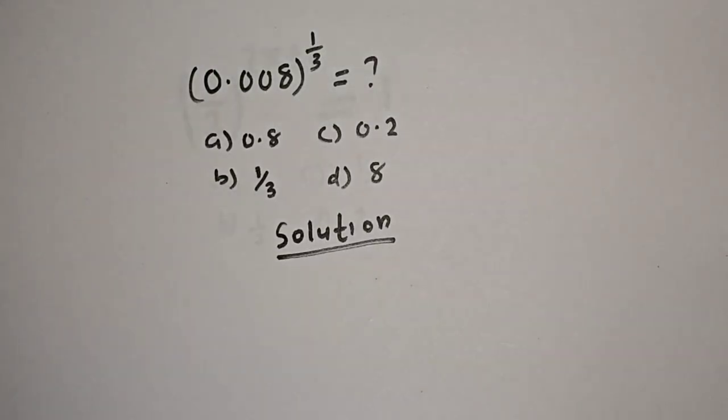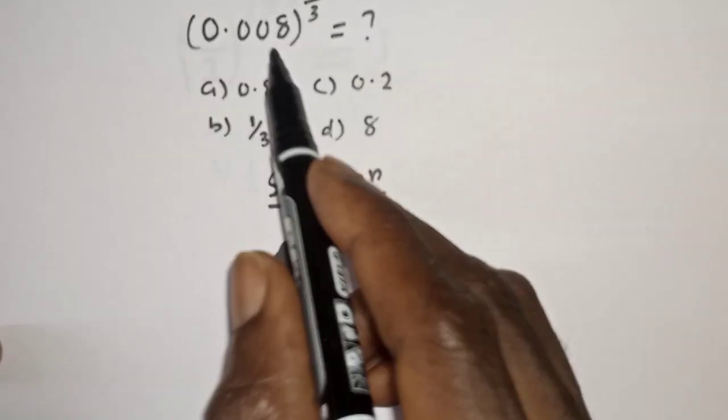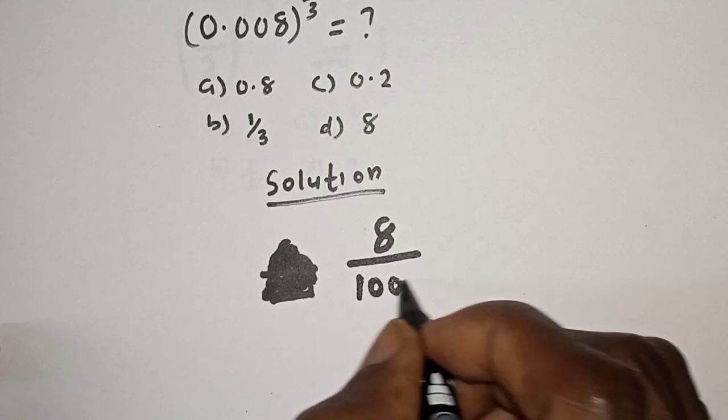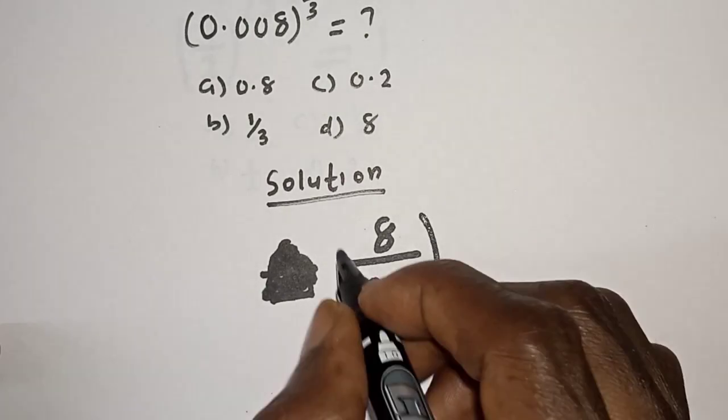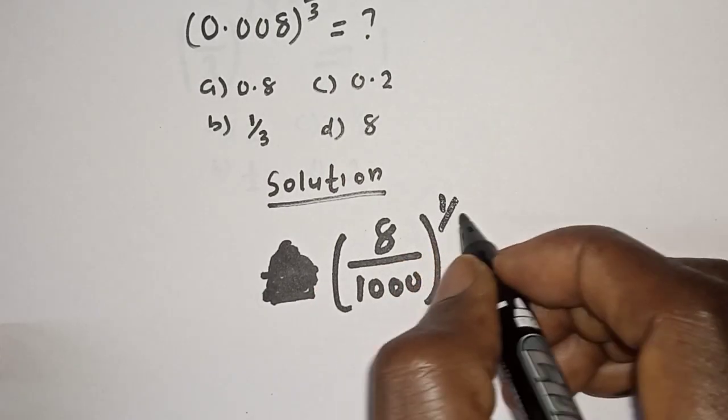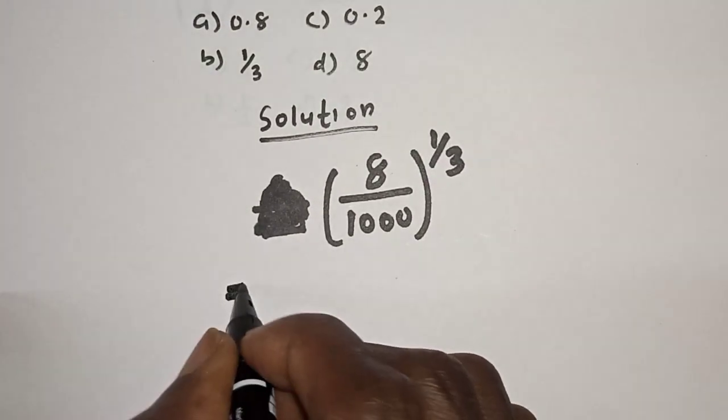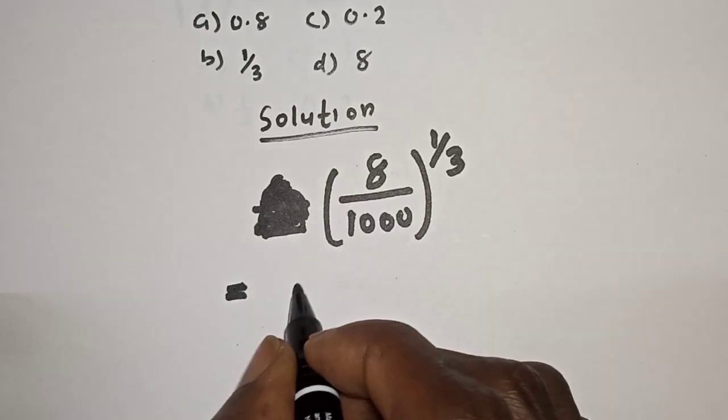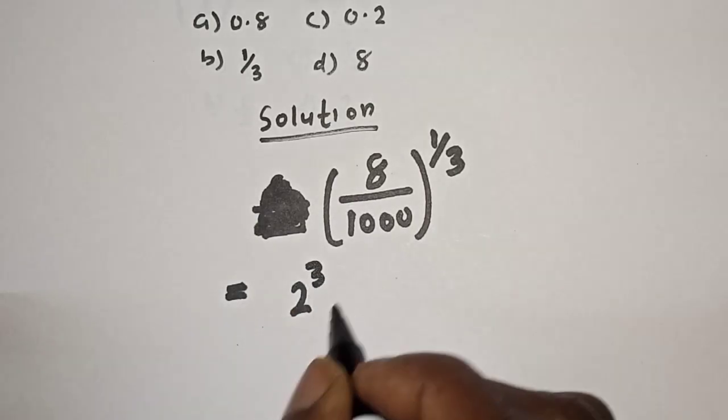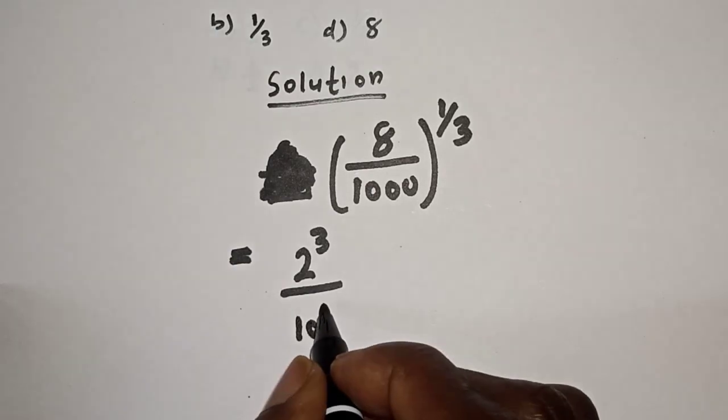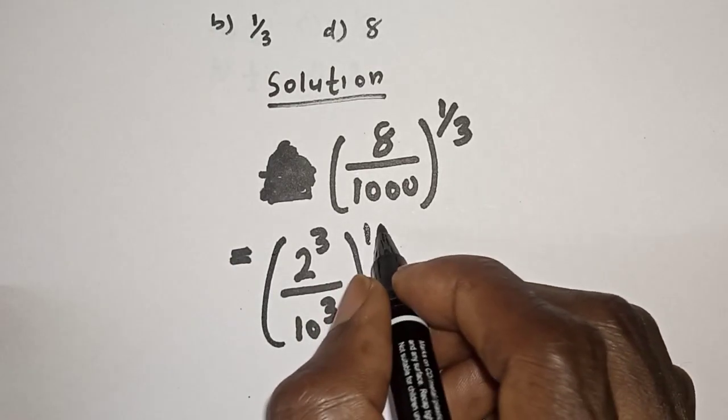Solution: 0.008 can be written as 8 over 1000, all raised to power 1 over 3. Then this is equal to 8 is 2 raised to power 3 over 1000 is 10 raised to power 3, all raised to power 1 over 3.